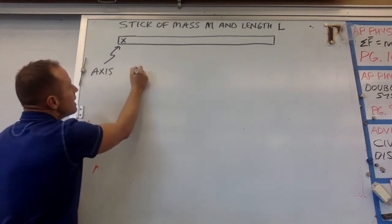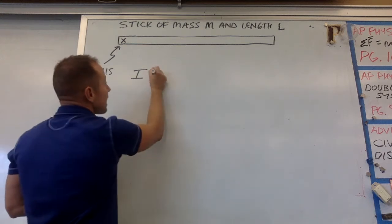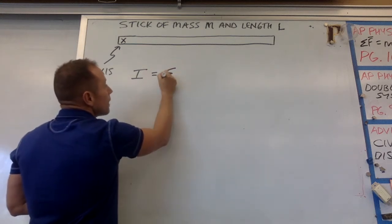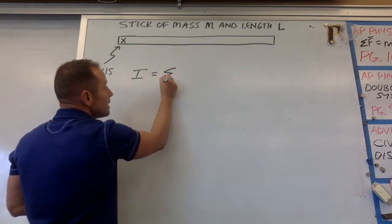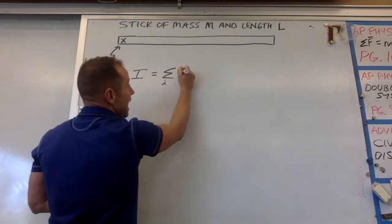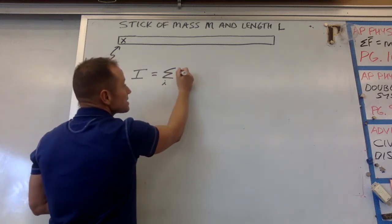So what's helpful is if you remember that for discrete objects, the way that you get the moment of inertia is you take each chunk of mass times its distance squared.